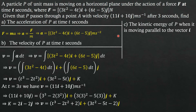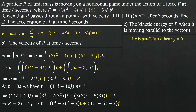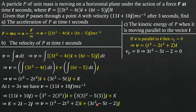Part C asks for the kinetic energy of P when it is moving parallel to the vector i. When a particle moves parallel to the vector i, it is moving parallel to the x-axis. This means the y-component of velocity is zero. So we set the j-component equal to zero: 3T² − 5T − 2 = 0.